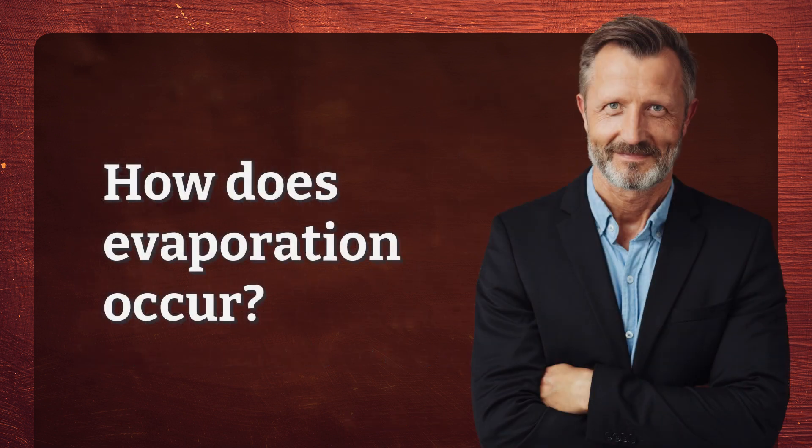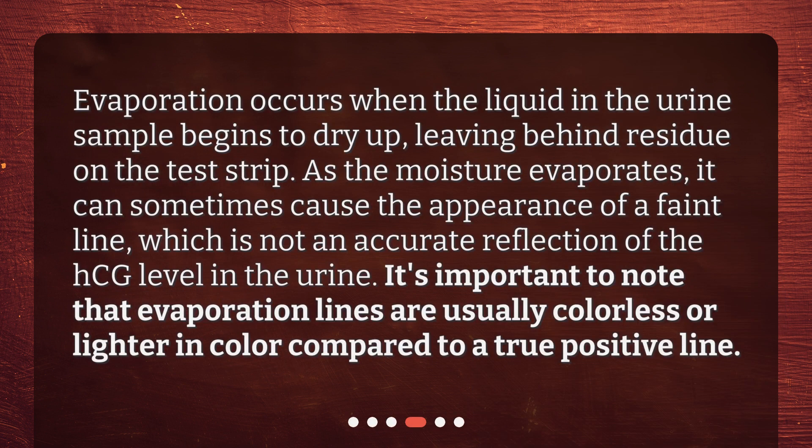How does evaporation occur? Evaporation occurs when the liquid in the urine sample begins to dry up, leaving behind residue on the test strip. As the moisture evaporates, it can sometimes cause the appearance of a faint line, which is not an accurate reflection of the HCG level in the urine. It's important to note that evaporation lines are usually colorless or lighter in color compared to a true positive line.